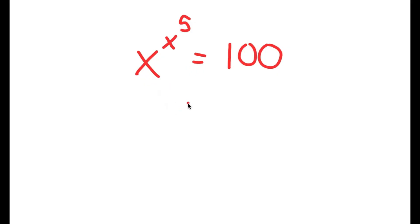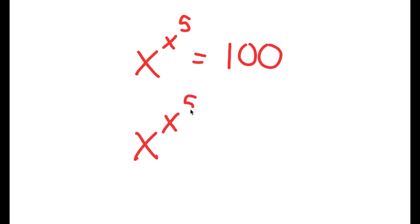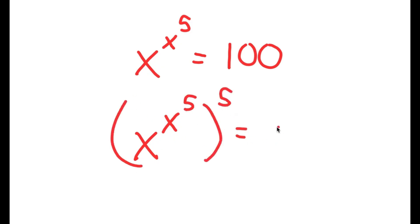To solve this, I'm going to first start by taking the power of 5 on both sides. So I get x to the power of x to the power of 5 to the power of 5, is equal to 100 to the power of 5.